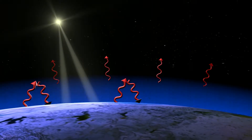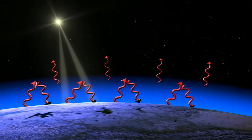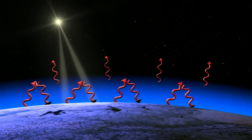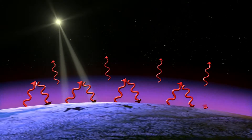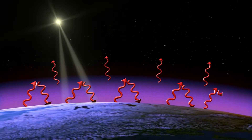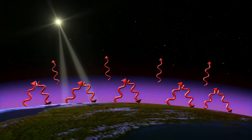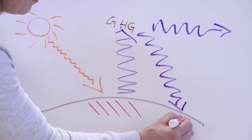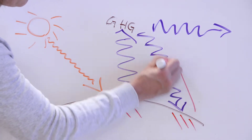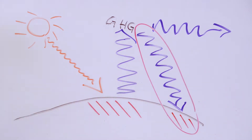Greenhouse gases in the atmosphere absorb this upward radiation from the surface. They then re-emit longwave radiation in all directions, including back down to the surface. The key point here is that the surface is further warmed from downwelling radiation from greenhouse gases.